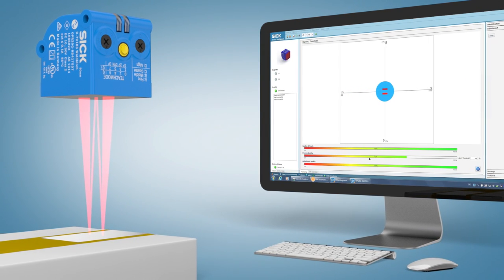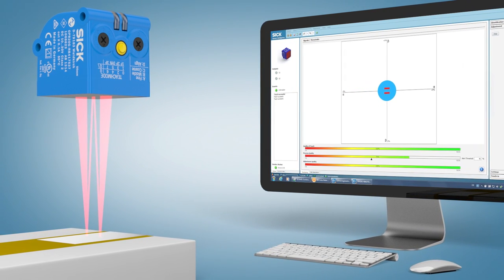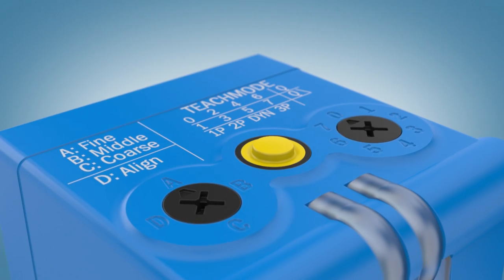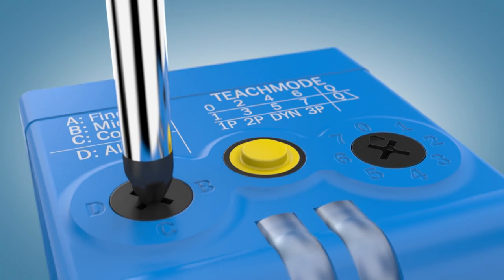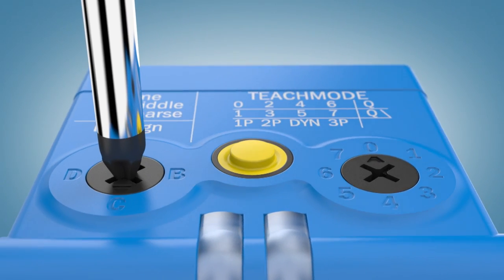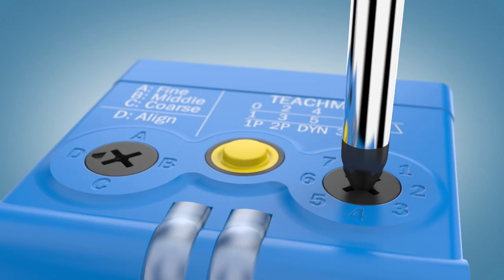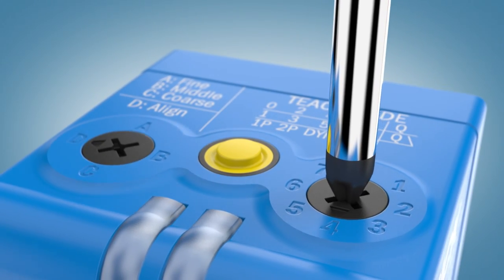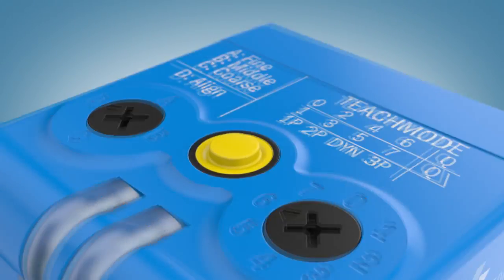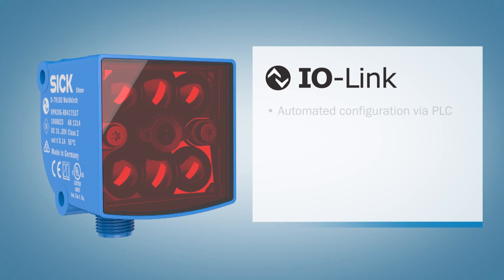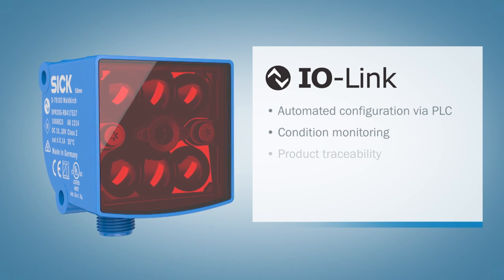With three sensitivity levels and four teach modes, the glare sensor can be quickly and easily adjusted to suit your individual application. Equipped with IO-Link, the glare sensor provides intelligent communication with additional benefits from configuration and operation through to monitoring.